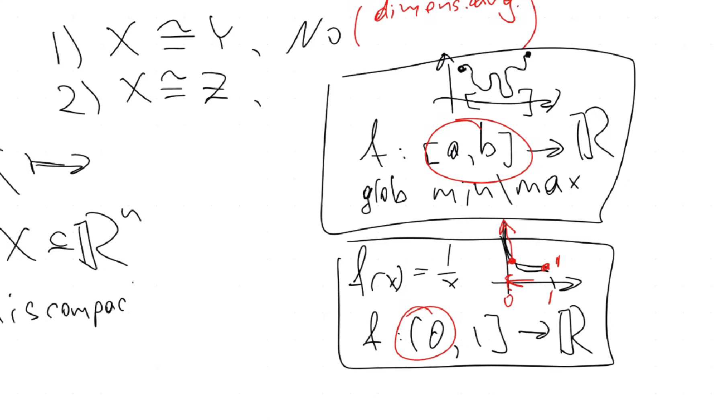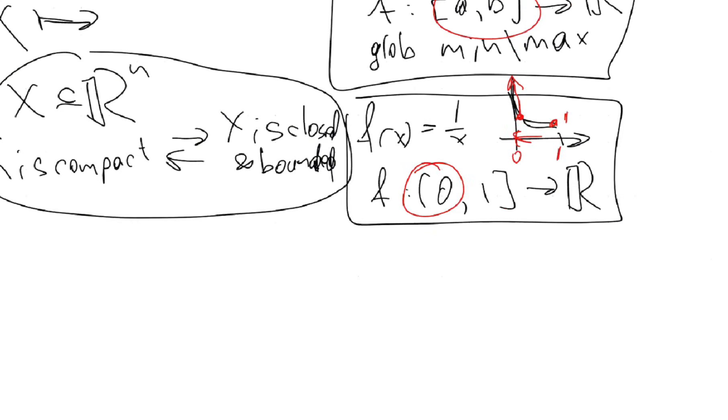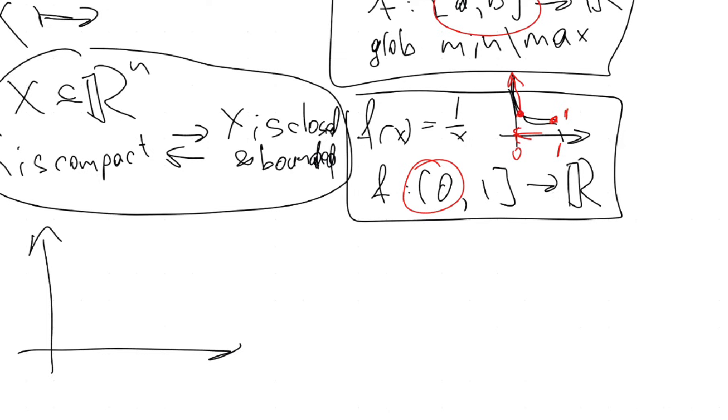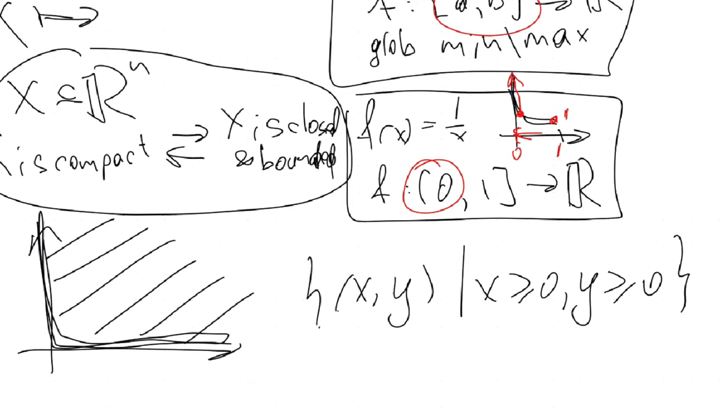This is going to be the same if and only if X is closed and bounded. That's why when you work in Rⁿ, let's work in R². Let's take this closed set. Is this compact? It's the set which is given by x,y with x ≥ 0 and y ≥ 0. So what do you need to check to verify that a set is compact? It's not bounded. Perfect. So this is not compact.